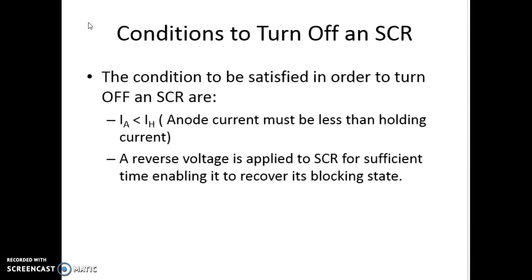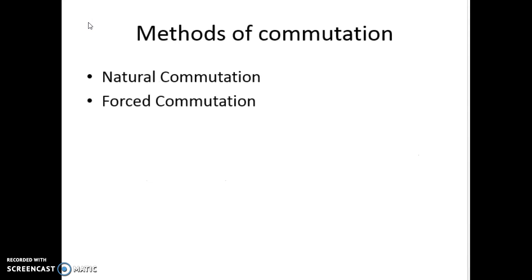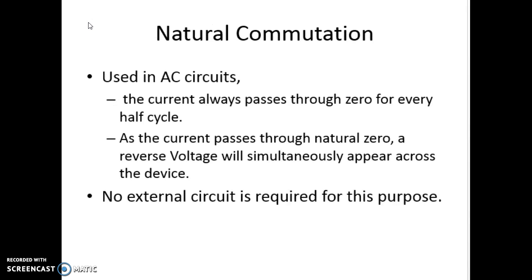There are two types of commutation broadly: natural commutation and forced commutation. As the name says, natural commutation will occur naturally without any external circuit.